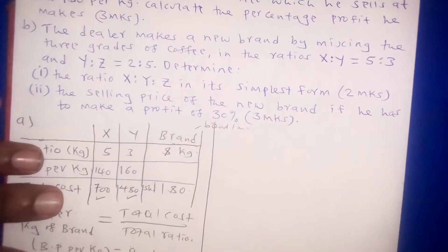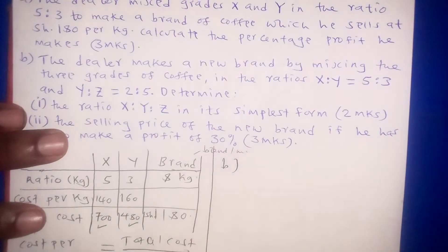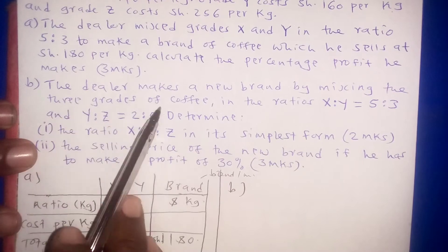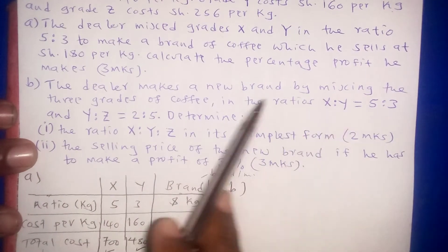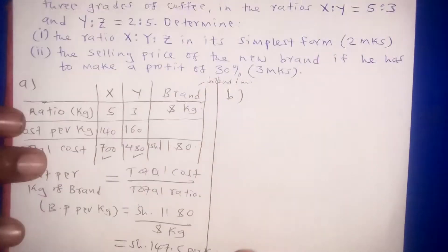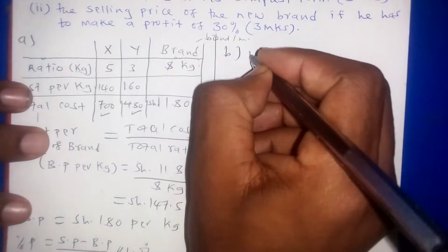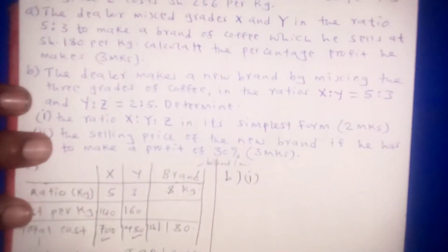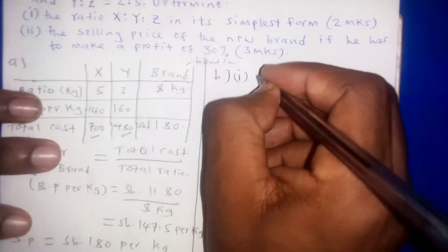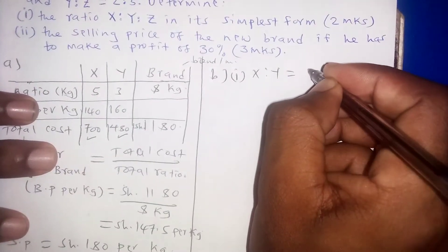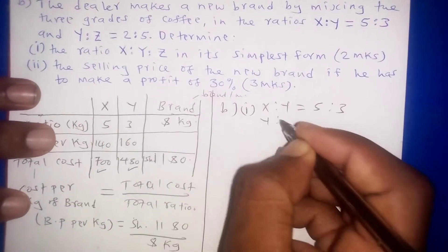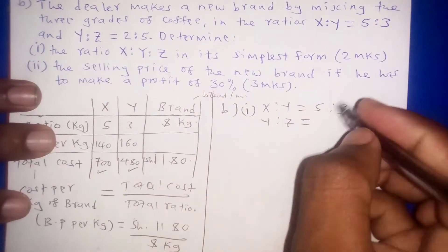That is part A. For part B, the dealer makes a new brand by mixing three grades in the ratio X to Y to Z. Part B Roman 1 asks us to determine the ratio X to Y to Z. We are given that X to Y is 5 to 3, and Y to Z is 2 to 5.